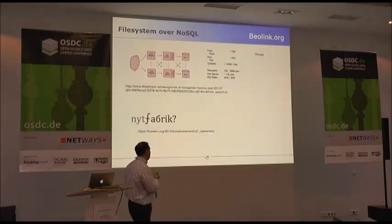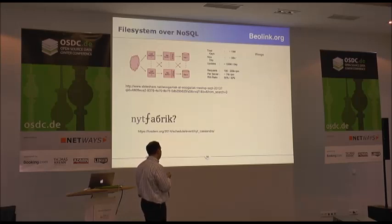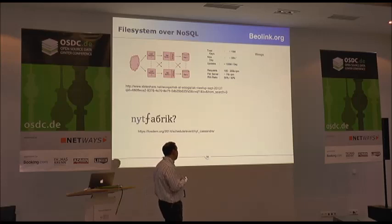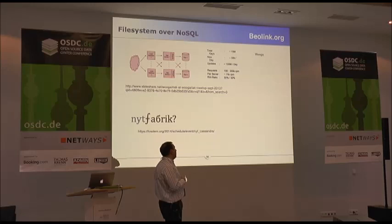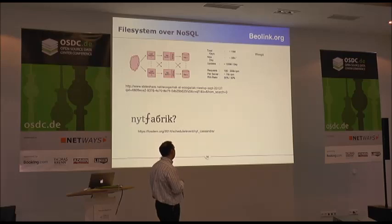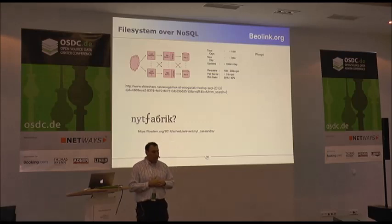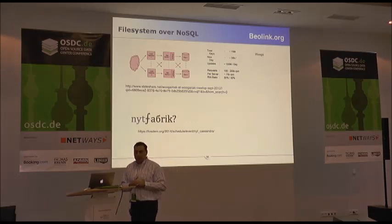You can find a lot of implementation examples. I picked one — Voga — they have 50 million keys, 50,000 new entries per day, 10 million updates per day, and 200,000 requests per minute.